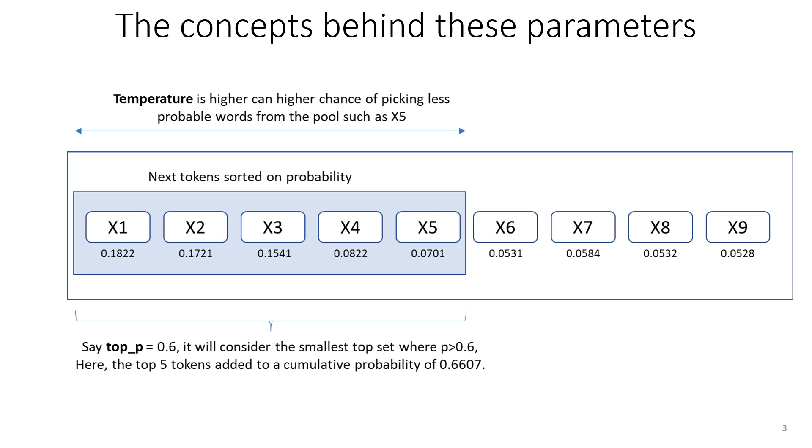First, let's consider what is Top_P parameter. Top_P decides the size of the pool from which the next token is to be picked up. Here what happens is it will consider the smallest set of tokens from the front where their cumulative probability is more than the provided Top_P value. In this example, the Top_P value is set to 0.6.